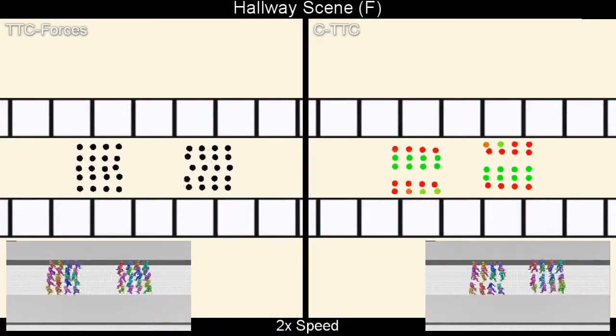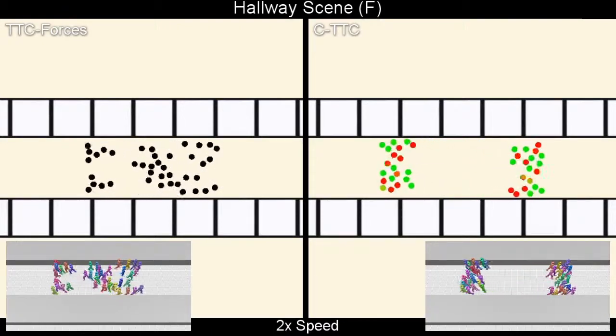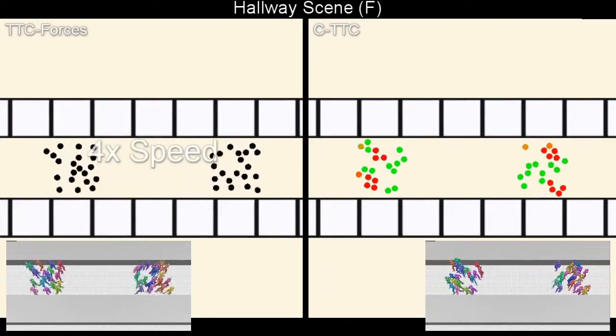Here we see a clumping behavior between similar color and direction agents. Again, note that CTTC is more efficient than TTC Forces.